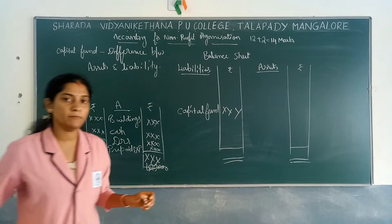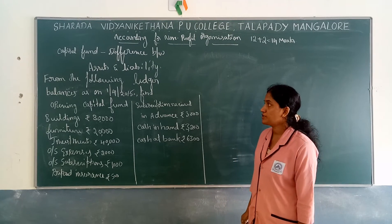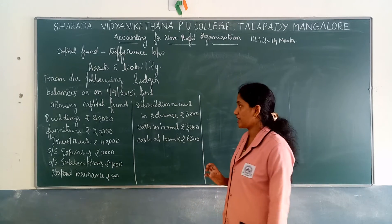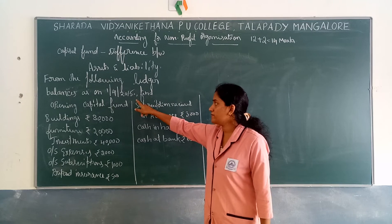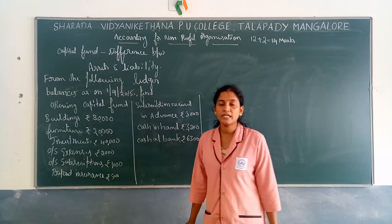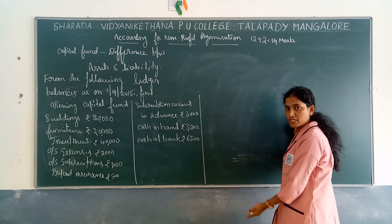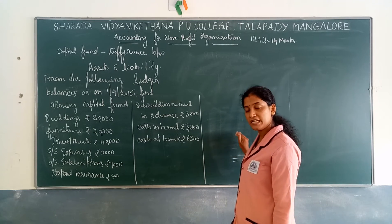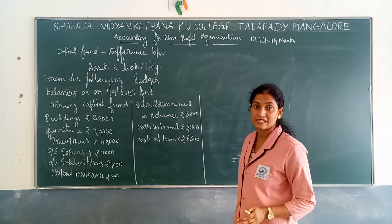Now we will see a problem related to Capital Fund. From the following ledger balances as on 1st April 2015, find the opening Capital Fund. We know that Capital Fund is calculated based on assets and liabilities. Whichever items are given under assets, write them on the asset side. If items are given for liability, write them on the liability side. The balancing figure is considered as the Capital Fund.